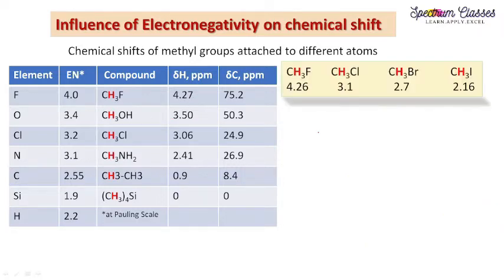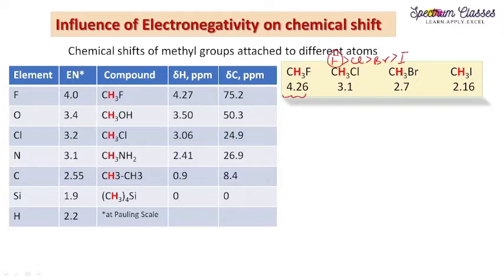Looking at the halogen series — fluorine, chlorine, bromine, and iodine — electronegativity decreases as we move down the group. Since fluorine has the highest electronegativity, it deshields the proton the most and causes resonance at the highest delta value. These delta values are in ppm. The next example is CH3OH with oxygen, nitrogen, and carbon comparisons — the methyl protons resonate at higher delta ppm values depending on the electronegativity of the attached element.